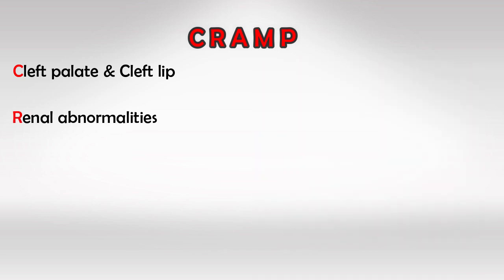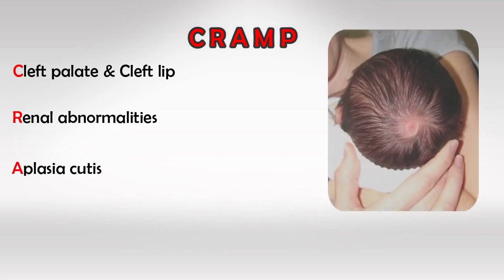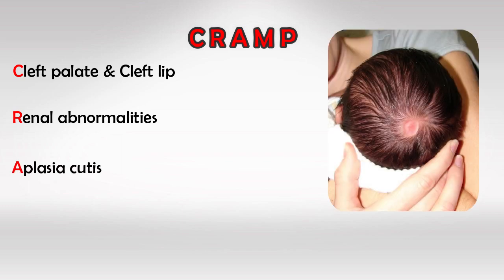R is for Renal Abnormalities — think Horseshoe Kidney and Absent Kidneys. A is for Aplasia Cutis, which is also highly characteristic.